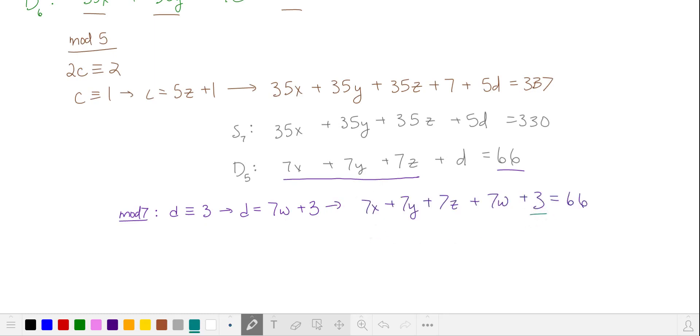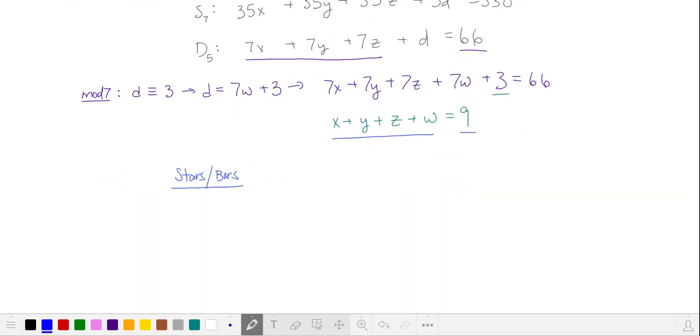We'll subtract this 3 and divide by 7. Now we have the sum of 4 integers is equal to 9. We can use stars and bars to solve this. We have 9 integers divided among 4 variables that are non-negative. That requires 3 dividing bars.